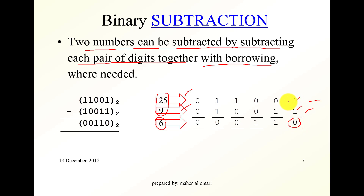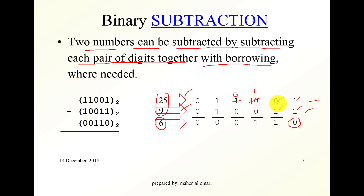Zero minus one — this is less than this, so we have to borrow. The zero doesn't have anything to lend, so we go further left to borrow the one. That bit becomes zero, and this position becomes one. We borrow one, so it becomes one, and that one carries here.